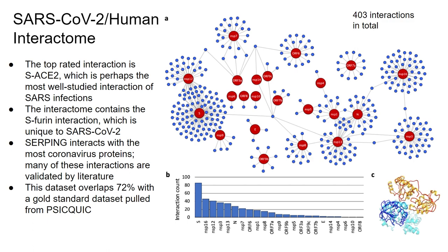The top interaction is spike-ACE2, which makes sense as it's the most well-studied. Interestingly, the network includes the spike-furin interaction, unique to SARS-CoV-2. Another interesting feature: the human protein SERPING1 connects to many COVID proteins. Many interactions are literature-validated. SERPING1 is a coagulation inhibitor, so it's interesting to see potential promiscuity with COVID proteins.